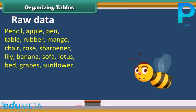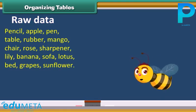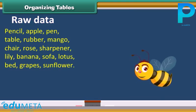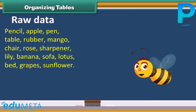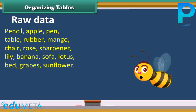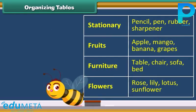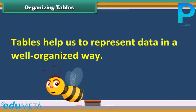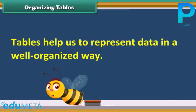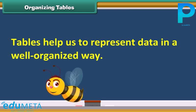The given data represents a raw data. We can arrange this data properly by using a table. Tables help us to represent data in a well organized way.